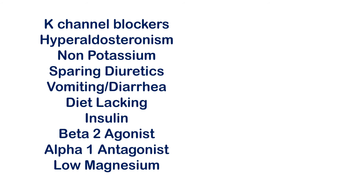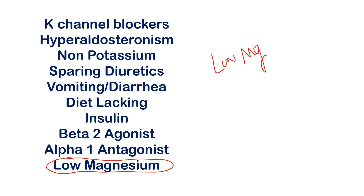Low magnesium is the last cause. The exact mechanism is complex, but just know that low magnesium causes potassium to be excreted into the urine and lost from the body. In cases of low magnesium, you can also develop hypokalemia.